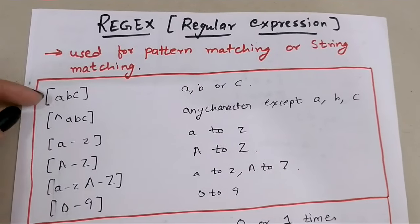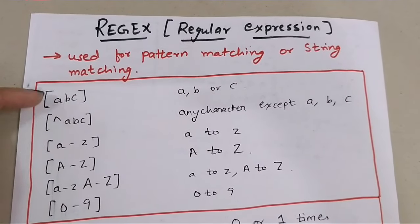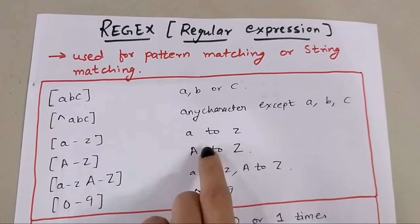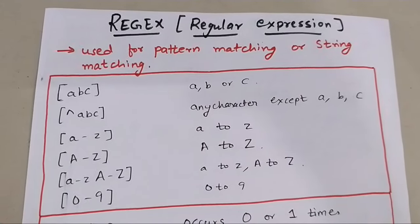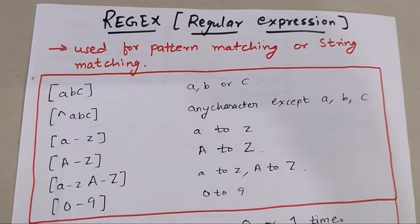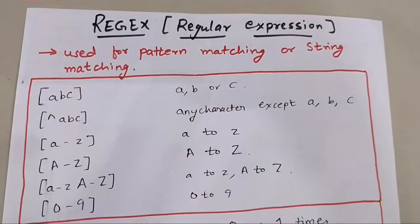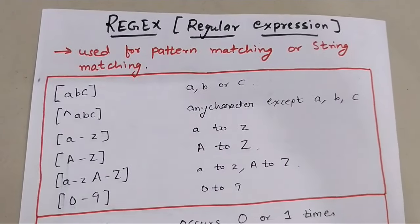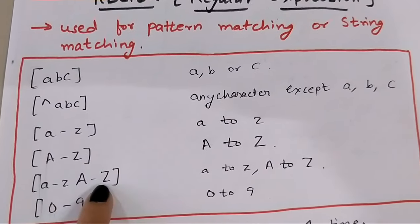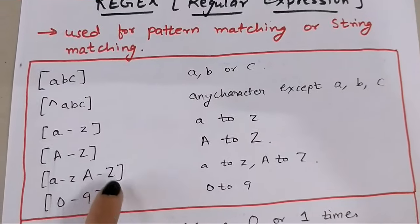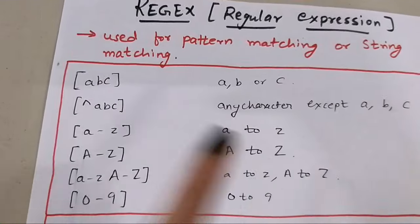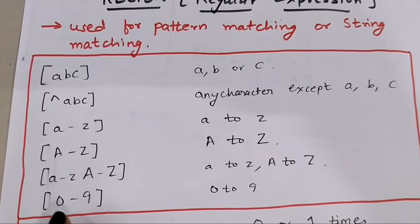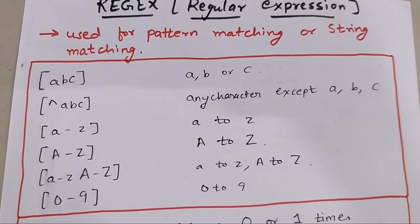When we write like this with a caret symbol, it basically means any character except abc — it is a negation of the previous one. When we write a-z it basically means any character between a to z. Capital A to capital Z means any character from A to Z. When we write a-z or A-Z together it means any character, lowercase or uppercase. Zero to nine means any digit from zero to nine.